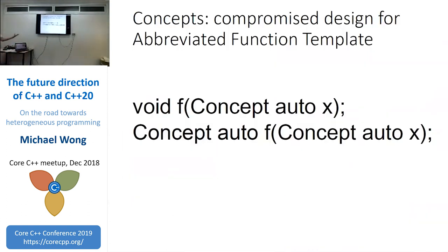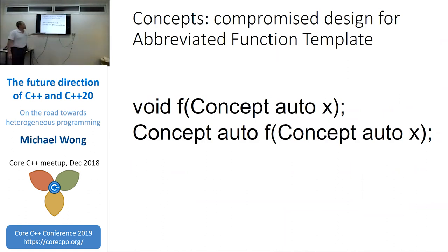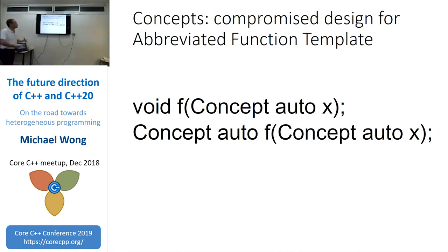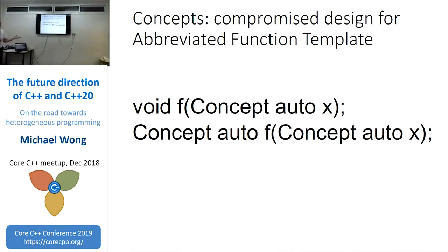Looking at concepts syntax: this was a compromise proposal that satisfied the people who didn't want to write the full template angle-bracket syntax for a concept, but also allows people who want to identify something explicitly as a template — because of the 'auto' keyword which tells you type deduction is happening. You can put the concept on both the return type and the variable, and you get full type deduction on the return type as well.